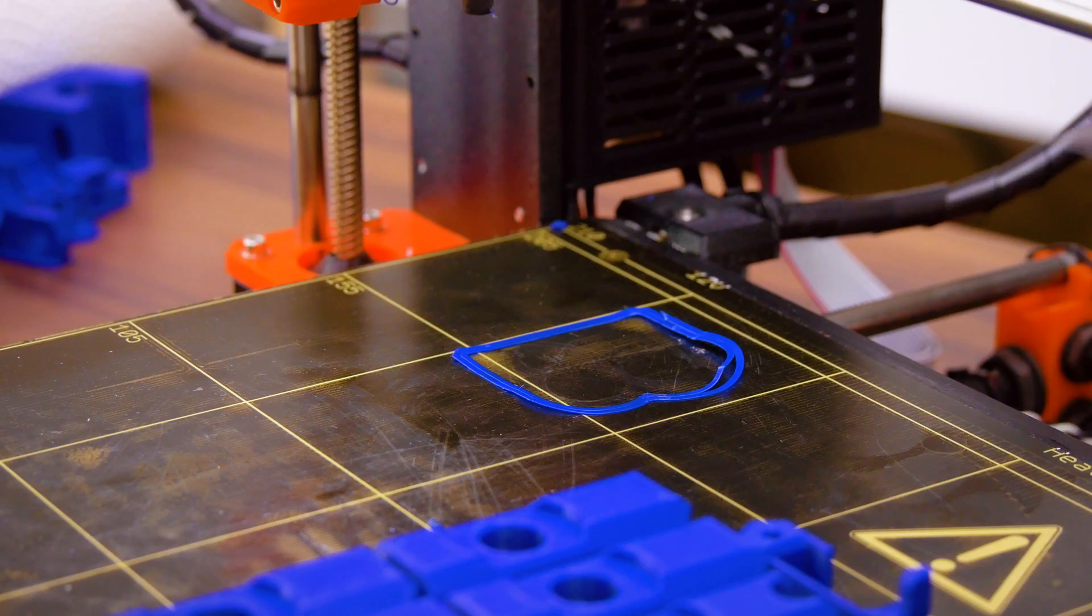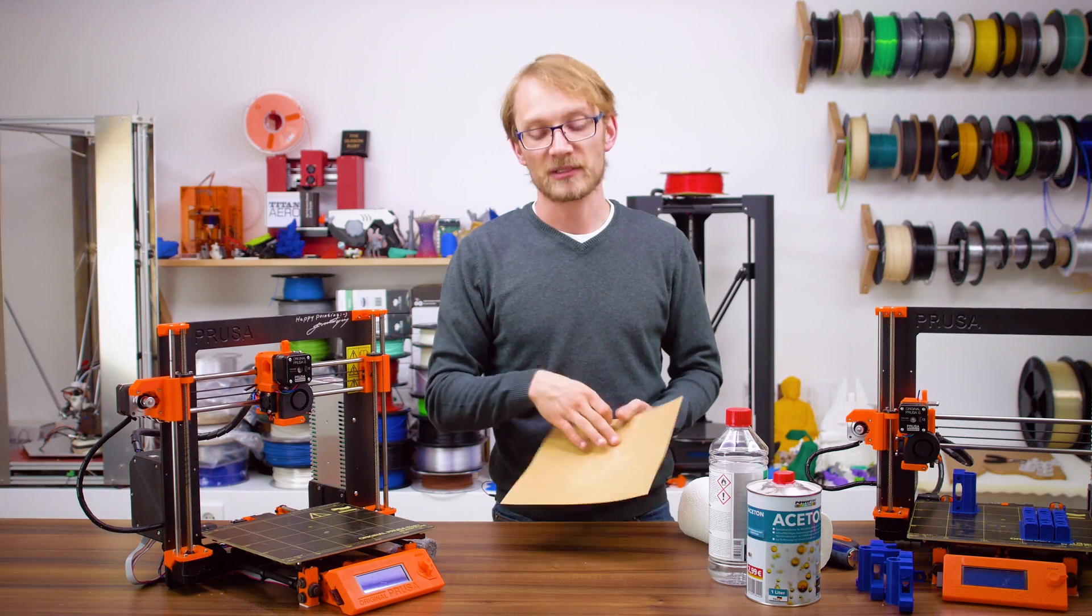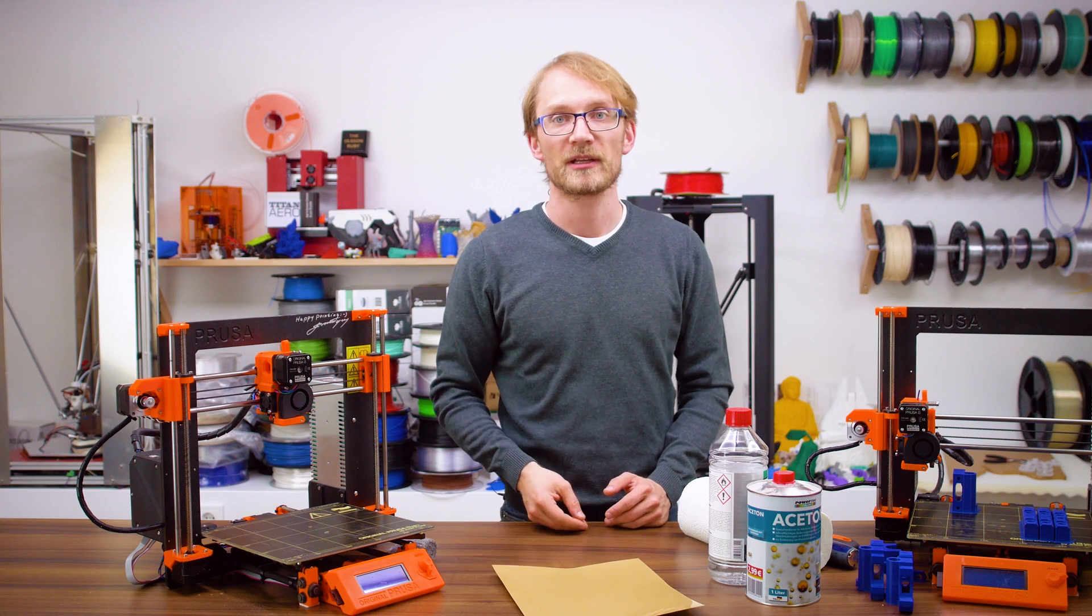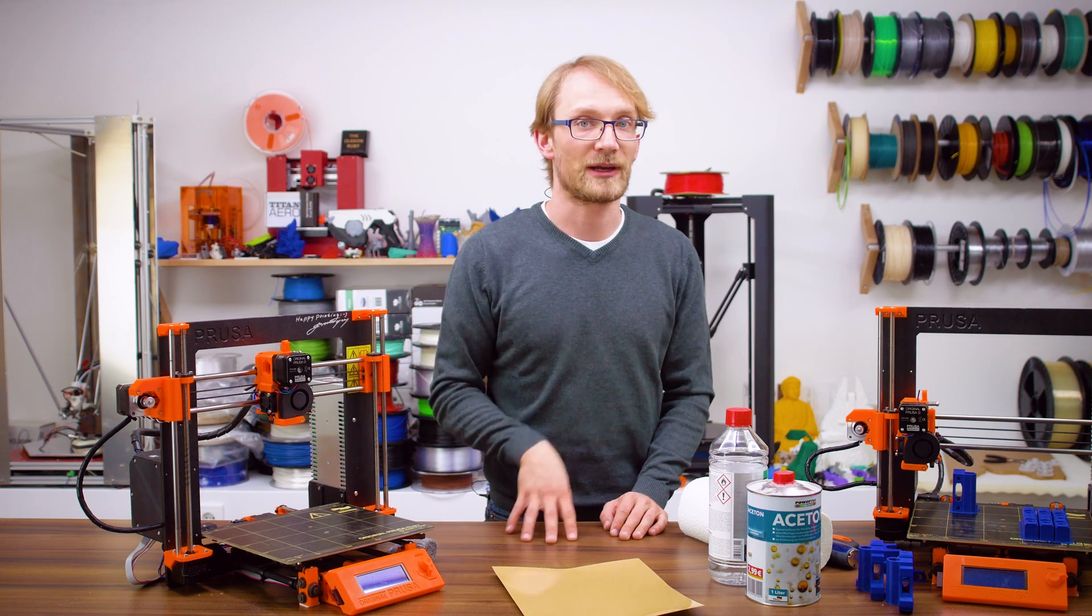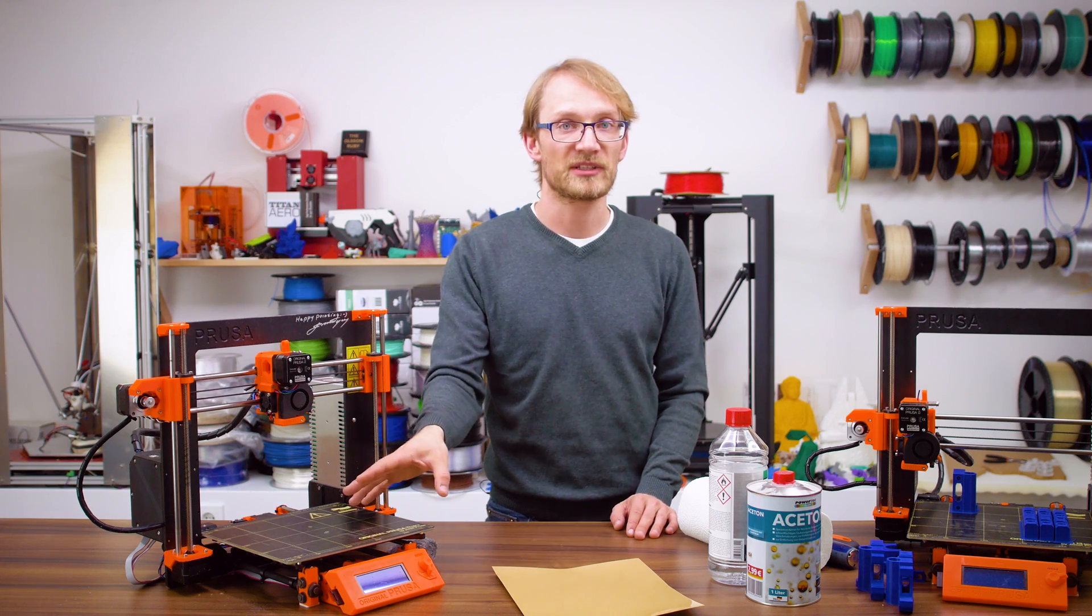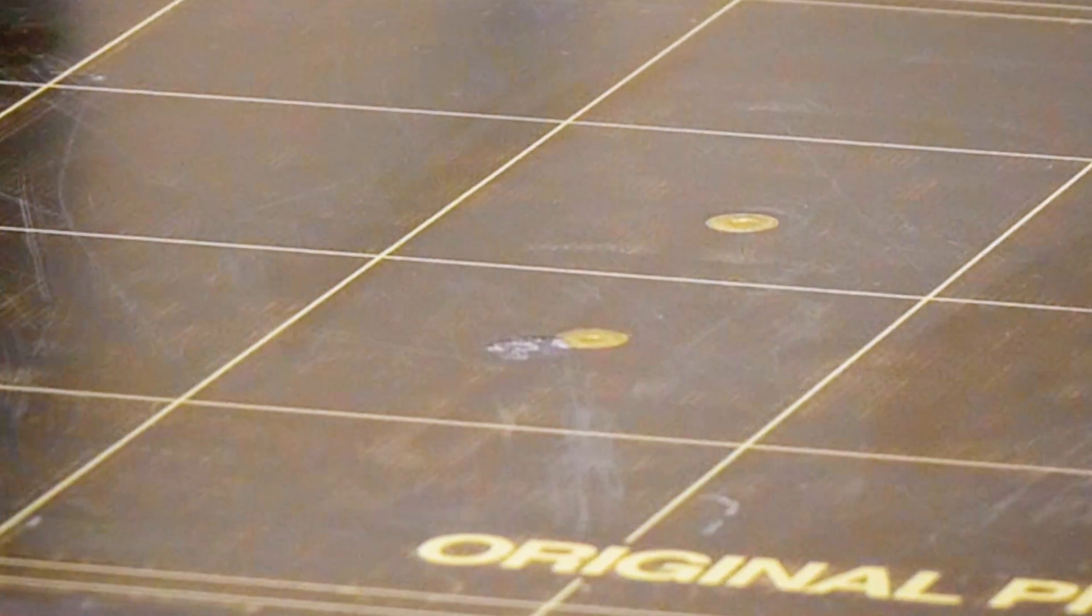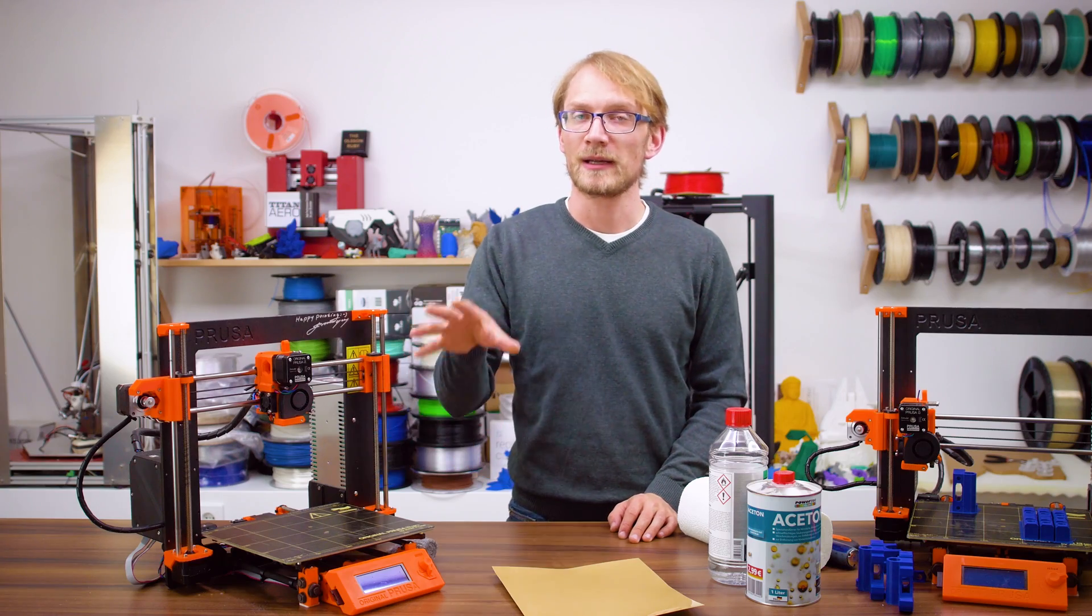3D Prima actually sells PEI sheets up to 2mm thick, which should be able to take a substantial amount of abuse before giving up, and you can literally sand it down if you ever have to. I've tried in the past to patch in little spots with glue stick where I had ripped the PEI, which was better than nothing and allowed me to keep using the PEI sheet for longer than I should have.